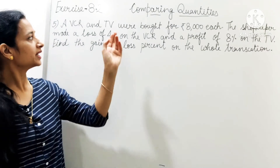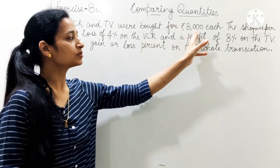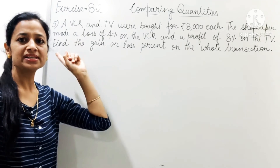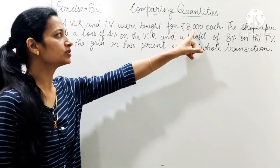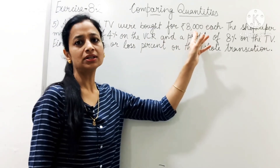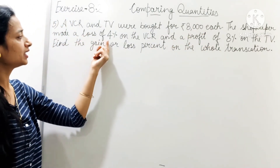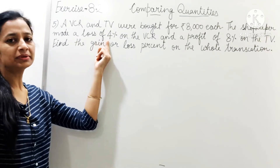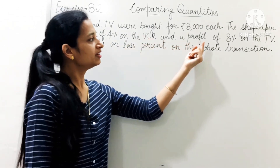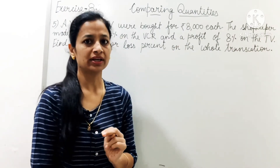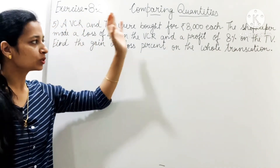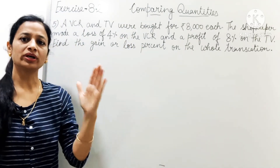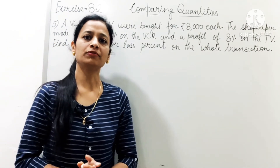What is given? VCR ka CP given hai 8,000, and TV ka CP bhi 8,000 — means dono items ka alag-alag cost price 8,000 hai. Then, VCR pe 4% loss hota hai and TV pe 8% profit hota hai. Ab aapse poocha gaya hai ki is total transaction mein usko profit hua ya loss hua, aur kitna percent?